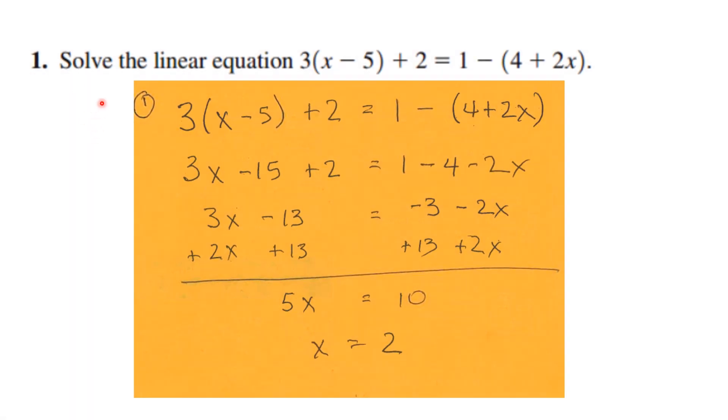Number one says solve the linear equation. The way one solves it is by doing algebra. We distribute the 3 and distribute the minus sign, then get our x's on the left side and numbers on the right side. We get 5x equals 10, and dividing both sides by 5, we conclude that x is 2.